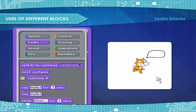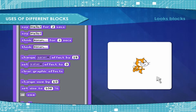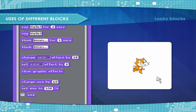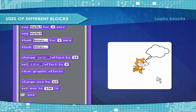Say — a speech bubble appears over the sprite and will not go away over time. Think for seconds — a thought bubble appears over the sprite and stays for the specified amount of time. Think — a thought bubble appears over the sprite and will not go away over time.